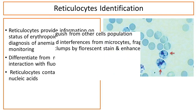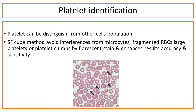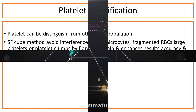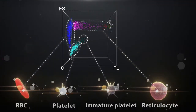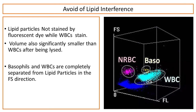Platelet identification: platelets can be distinguished from other cell populations, avoiding interferences from microcytes, fragmented RBCs, large platelets, or platelet clumps through fluorescent staining, which enhances results accuracy and sensitivity.